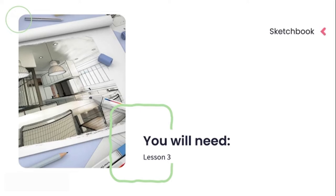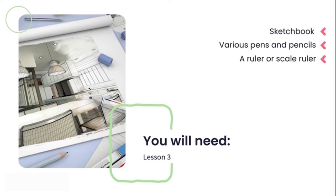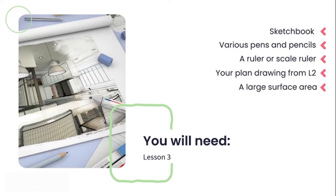Firstly, your trusty sketchbook. Then you'll need various pens and pencils. A ruler or scale ruler — this is for the people that are feeling brave, and I'll explain this towards the end of the lesson. You can grab your plans that we drew up in lesson two. You'll need a large surface area to draw and feel creative. And last but not least, a nice quiet space. Let's get in the groove and begin designing.